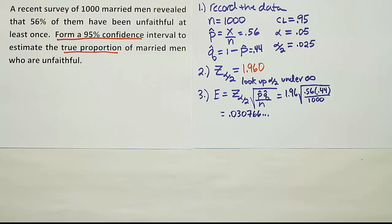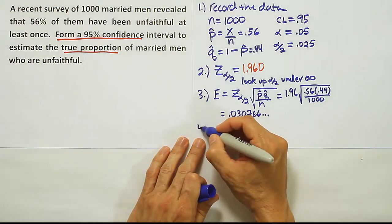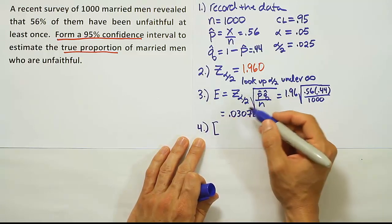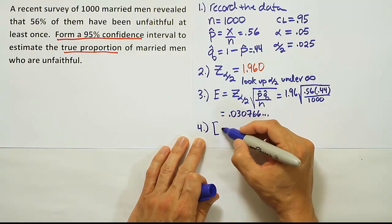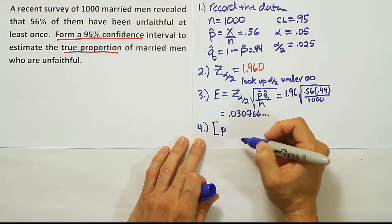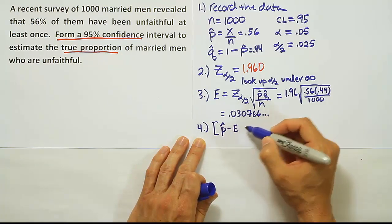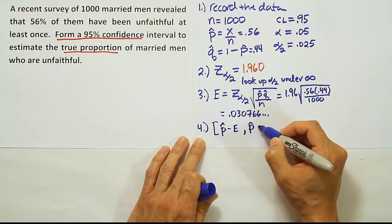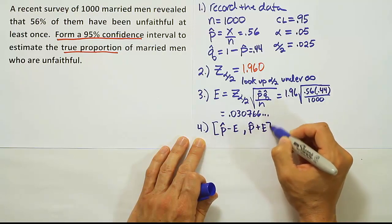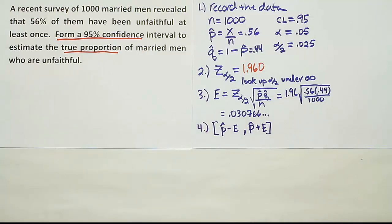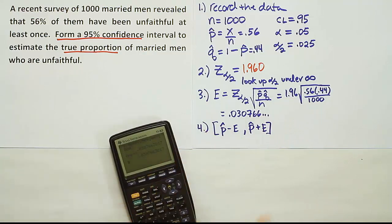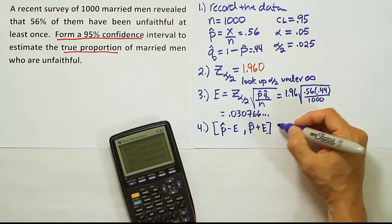The next step is the easiest—we simply do the addition and subtraction of the error to and from our point estimator. Our point estimator is now p-hat, our sample proportion. We'll subtract the error from that, and then add the error. In this case, our p-hat is 0.56, so we take away the error and add that same amount to it.